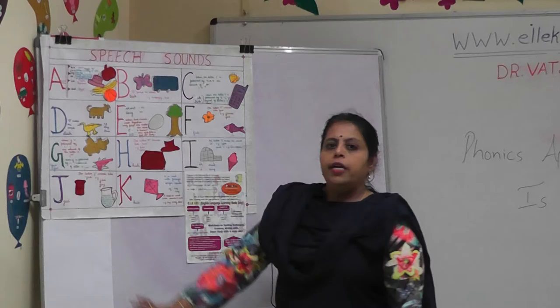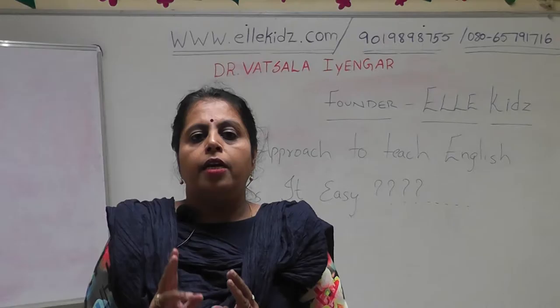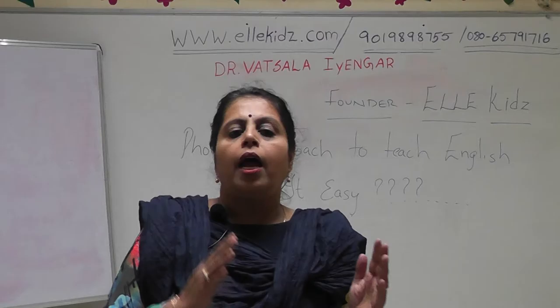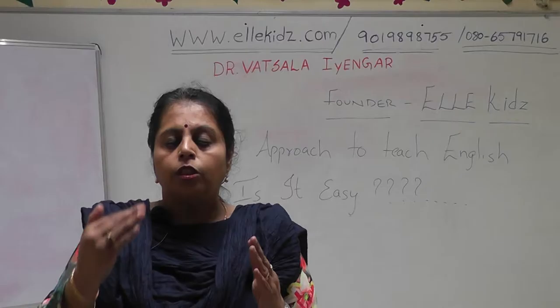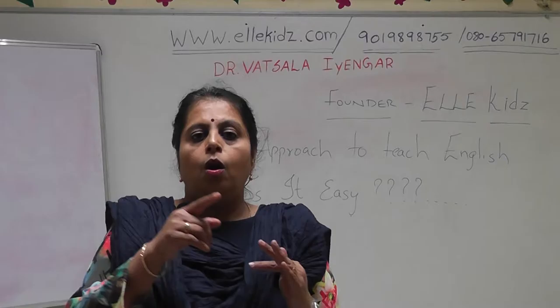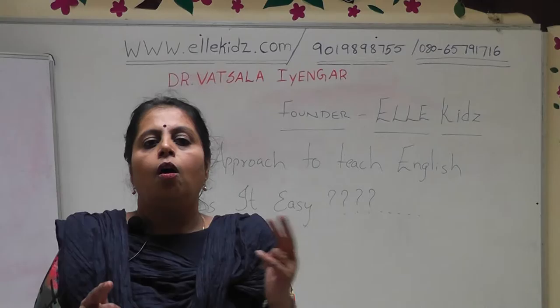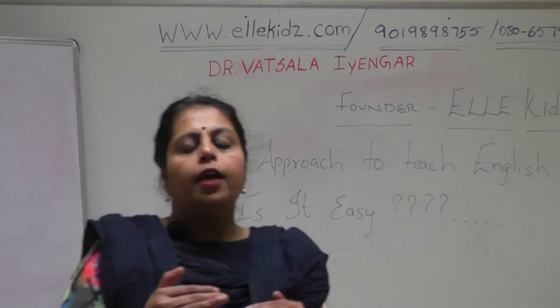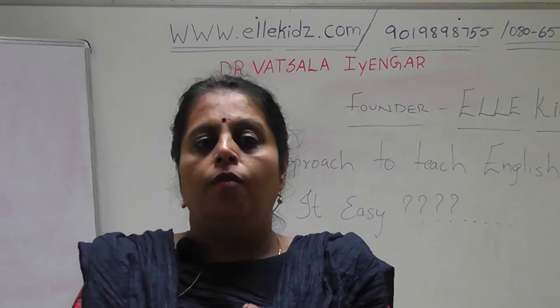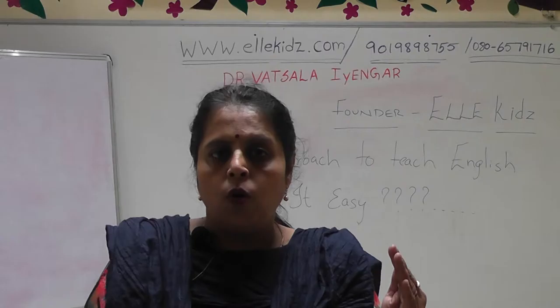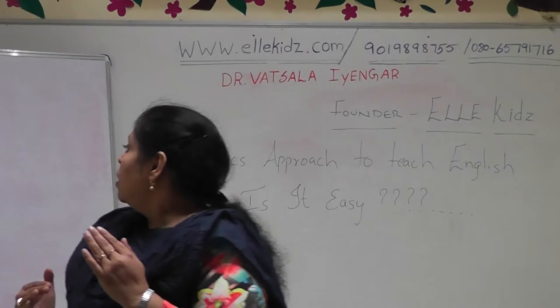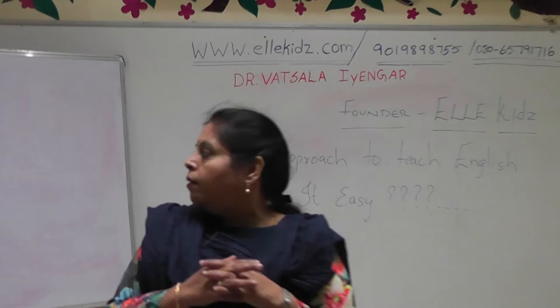If you look at the letter G, it is a little complicated for children because G has two sounds: G and J. When can we say G or when can we say J? G has a hard sound and a soft sound. The hard sound occurs when G is followed by A, O, or U — as in the words gate, gold, and gun.